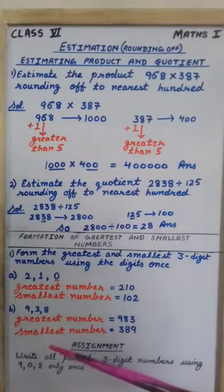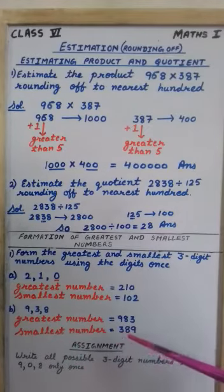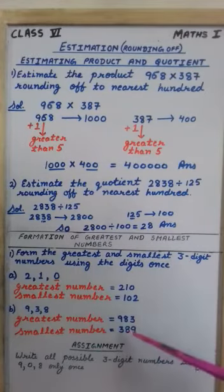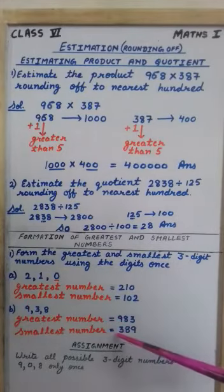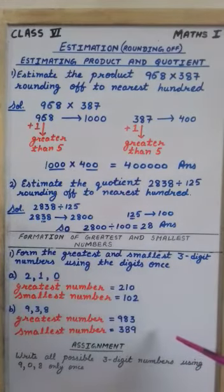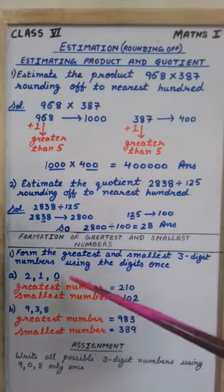And now if I have to form smallest number, then it is just reverse of these numbers. I will begin with the smallest digit, then the next one 8 and then the biggest one 9. So answer is 389. So this is how to form the greatest and smallest numbers using the digits once.